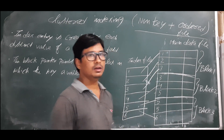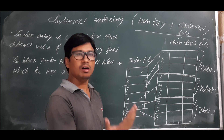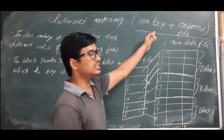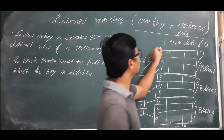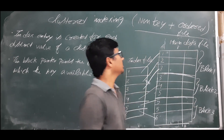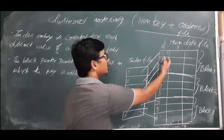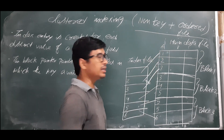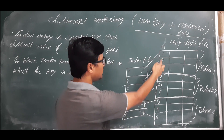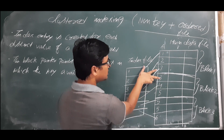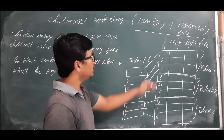In the data file we have several fields — a key field and a non-key field. Clustered indexing is created on the non-key field. Let's say the attribute names are A, B, C. The indexing was created on attribute A, which is a non-key field, meaning it can have duplicate values. We can see that value 3 is repeated twice and value 5 is repeated three times.